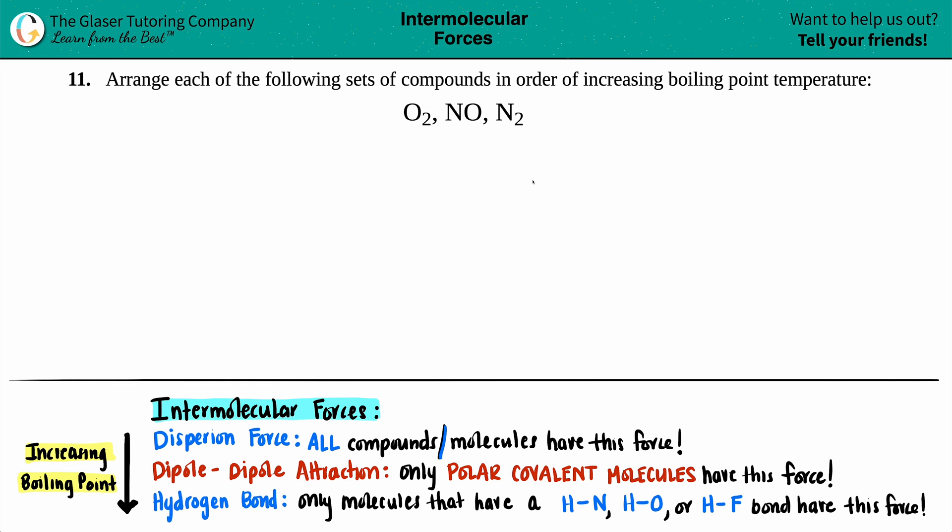Number 11. Arrange each of the following sets of compounds in order of increasing boiling point temperature. And then we have O2, NO, and N2.